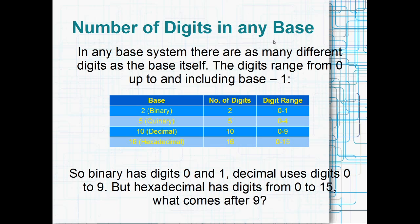Okay, so the number of digits in any base, this is the other thing that changes along with those powers. It's the number of digits that you can use. In any base system, there are the same number of digits as the base itself, and the digits range from 0 up to the base minus 1. So we see something like binary, there's two different digits in binary.